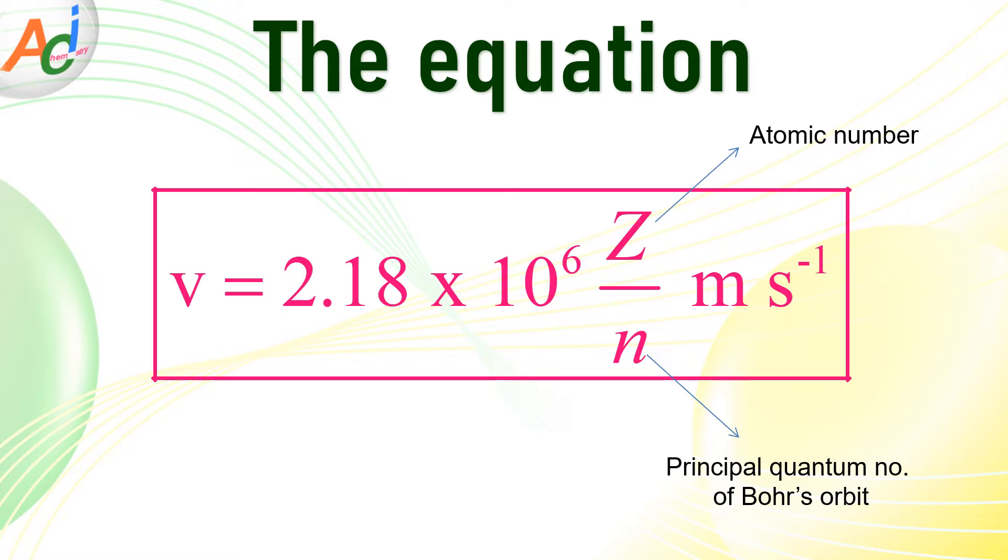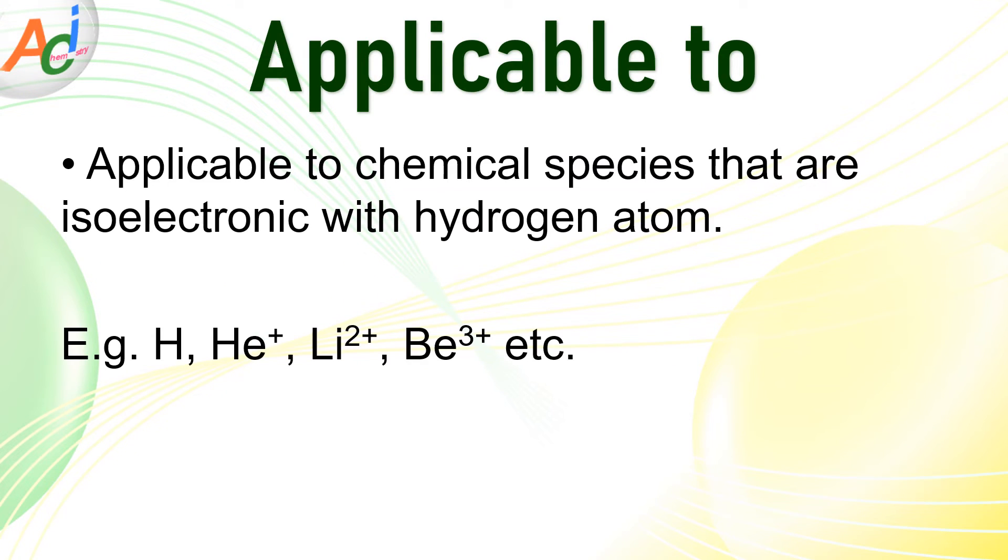I encourage you to note down this formula in a notebook and also commit it to your memory as it will help you when solving problems related to this subject matter. However, it is important to note that this formula is only applicable to chemical species that are isoelectronic with the hydrogen atom.